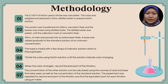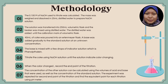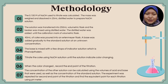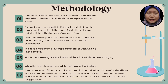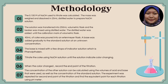After that, 40 ml of Coke was poured into an Erlenmeyer flask. A base was added gradually to the standard solution at an unknown concentration. The base was mixed with a few drops of indicator solution, which is phenolphthalein. The Coke was then titrated using sodium hydroxide solution until the solution indicated a color change. When the color changed, the endpoint of the titration was recorded.